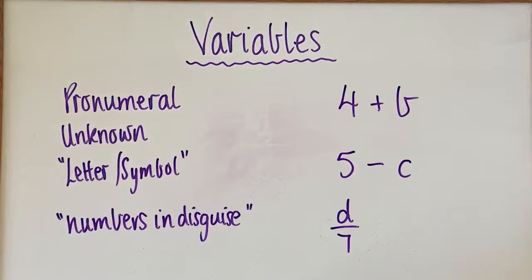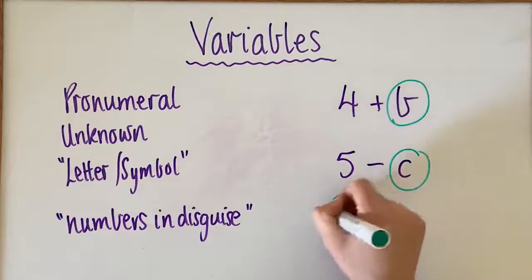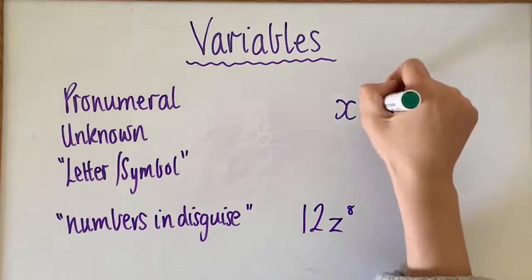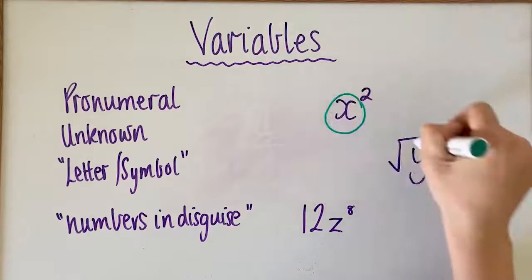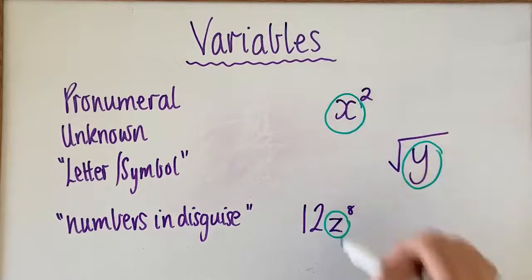In these examples here, our variables are all of our unknown values. The variable is just that letter, so it's not the whole term, it's just the letter.